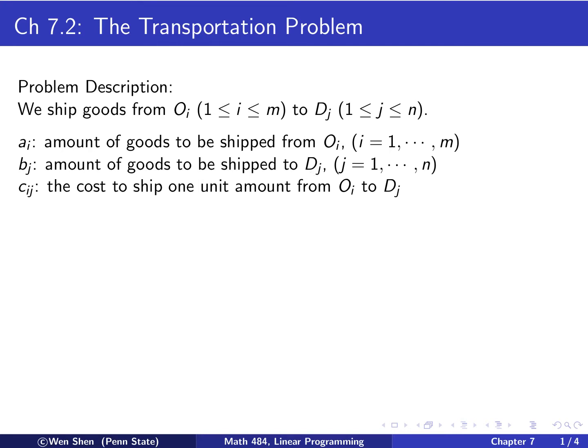But different from the distribution problem, we now have a cost for the shipping. So Cij would be the cost to ship one unit amount from OI to DJ. This is the new constant.